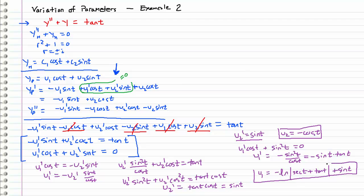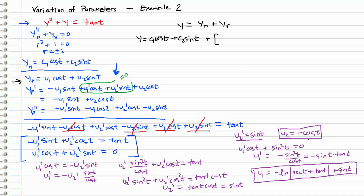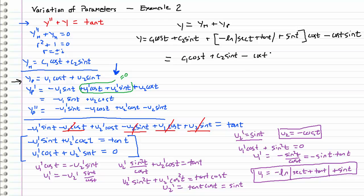Now that we have u1 and u2, we can assemble the final solution y, which is the homogeneous plus the particular solution. The general solution is c1 cosine t plus c2 sine t, plus the particular solution u1 cosine t plus u2 sine t. Substituting in: the u1 term gives negative natural log of secant t plus tangent t plus sine t, all times cosine t, and the u2 term gives negative cosine t times sine t. Simplifying — the sine t cosine t terms cancel — we arrive at c1 cosine t plus c2 sine t minus cosine t times the natural log of secant t plus tangent t.